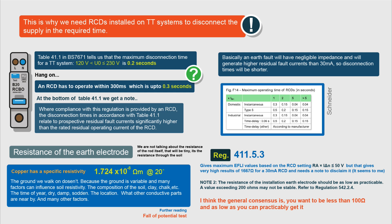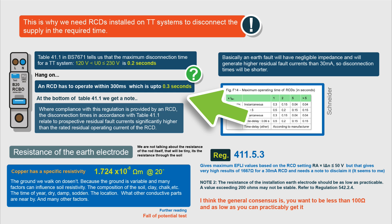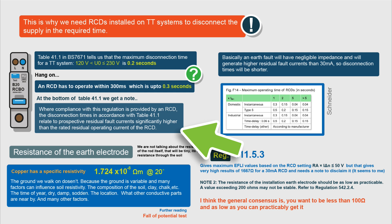As mentioned, the high earth fault loop impedance means that our disconnection times will not be met. This is why we have RCDs on TT systems. BS 7671 tells us that the maximum disconnection time for TT systems is 0.2 seconds, but when we're testing our RCD it can operate within 300 milliseconds, which is up to 0.3 seconds. That doesn't sound right, but if you look at table 41.1 there's a note: where compliance with this regulation is provided by an RCD, the disconnection times relate to prospective residual fault currents being significantly higher than the rated residual operating current of the RCD. You can see in this table — the higher the fault current, the quicker the device will operate.